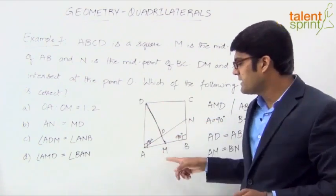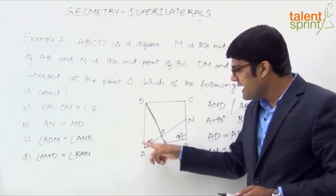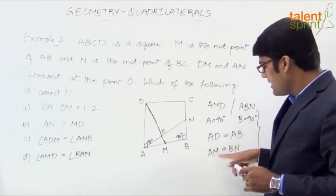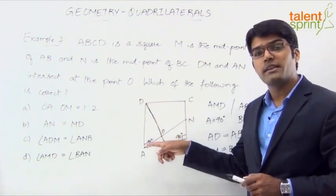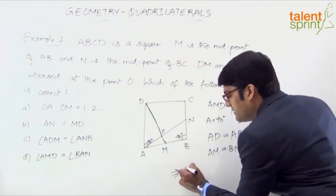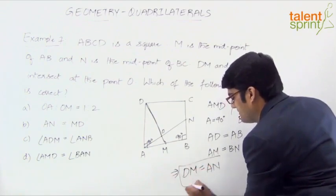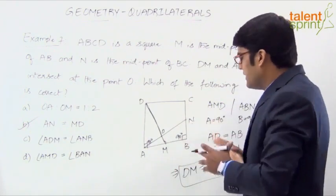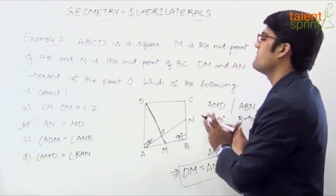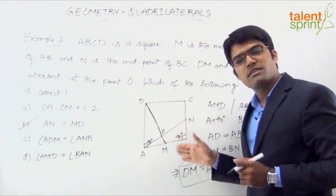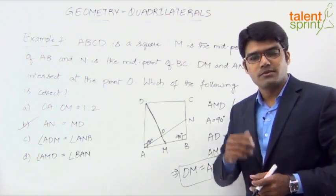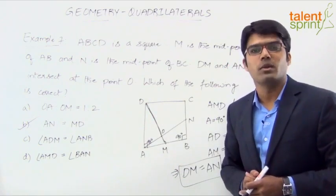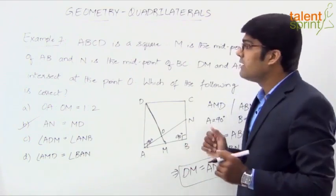Looking at all three similarities — both are right-angle triangles, AD equals AB, and AM equals BN — which means the hypotenuses will also be equal. Applying the Pythagorean theorem: DM² = AD² + AM² = AB² + BN² = AN². Therefore DM equals AN, as given in option B. So option B is the correct answer. This is a straightforward observation from the figure — the lines connecting the midpoint to the diagonally opposite vertex are equal.